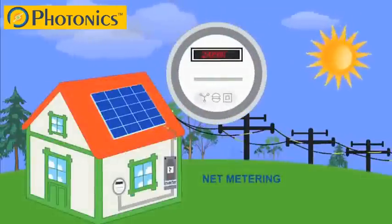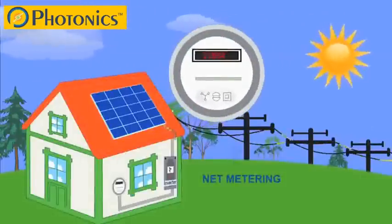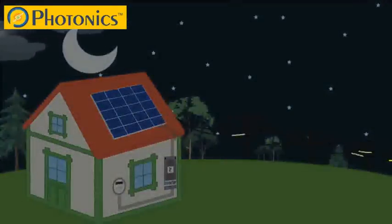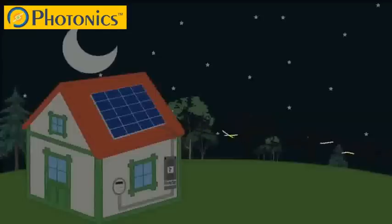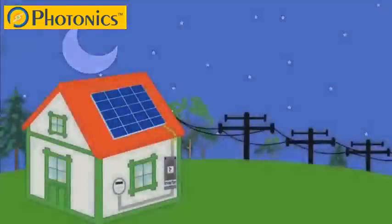Then at night or on cloudy days when your solar system is not producing enough energy for your home, you'll be able to draw power down from the grid, so you never have to worry about running out of electricity. And if you are producing more energy than your household requires, then you'll get a credit from the utility company.